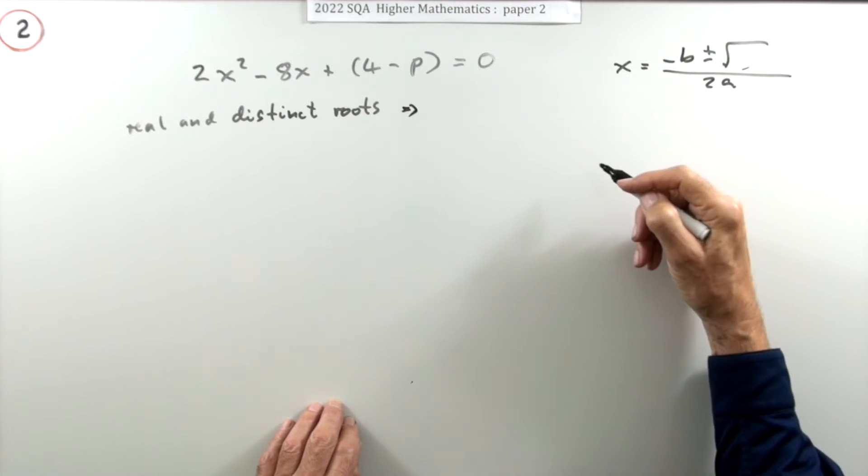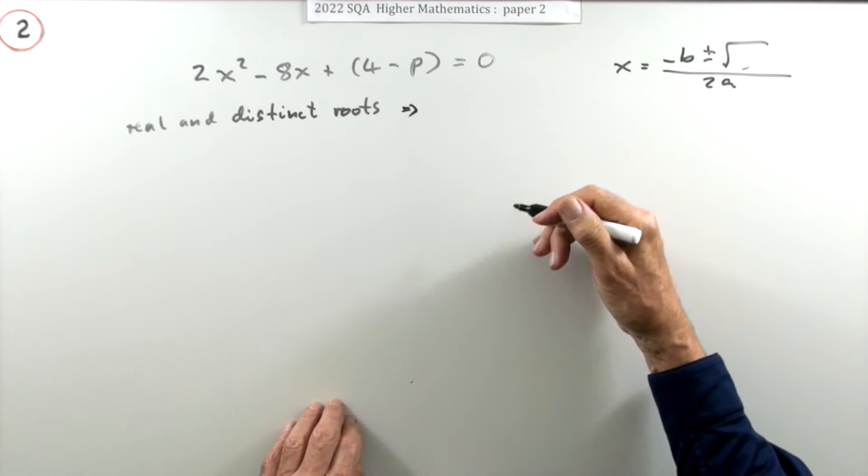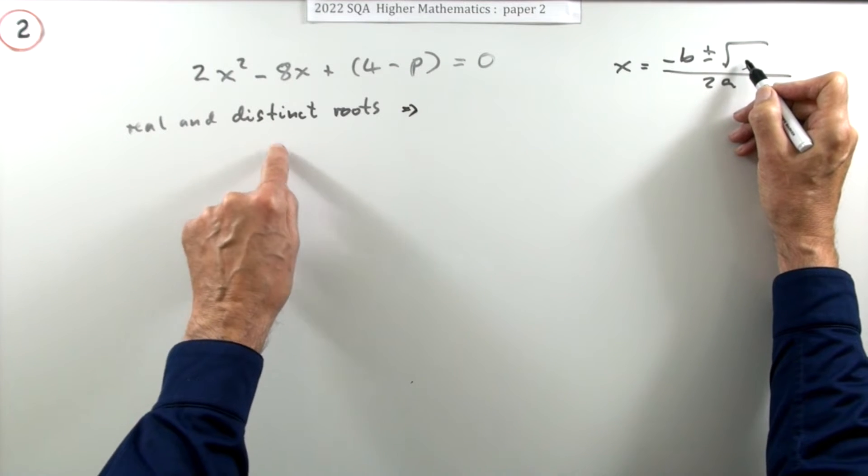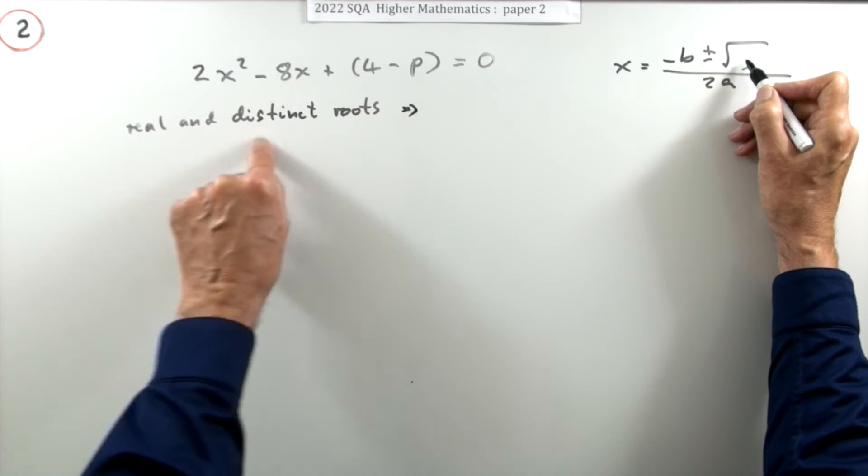If that was a zero, you'd have plus or minus nothing. There'd only be one answer, those are equal roots. If it was negative, you'd have no real roots. So this part here must be greater than zero to give you two real and distinct roots.